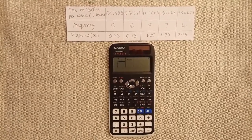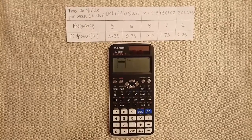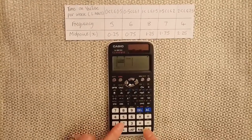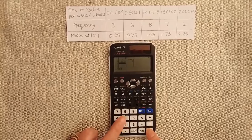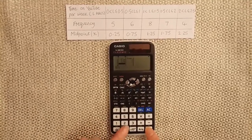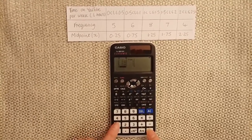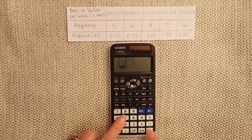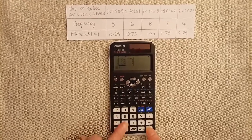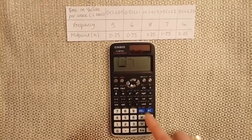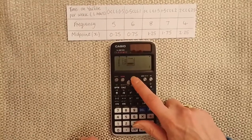Now enter your midpoint and frequency data: 0.25 equals, 0.75 equals, 1.25 equals, 1.75 equals, 2.25 equals. Over to the next column.